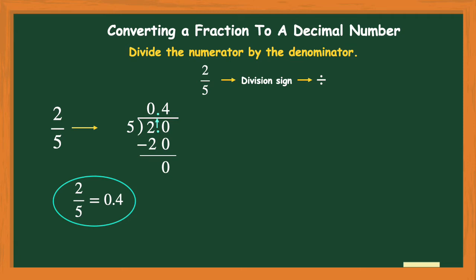We call this type of decimal number a terminating decimal, because there is no remainder and the decimal number just ends. Now I'm going to show you another fraction that also turns into a terminating decimal — three-fourths.